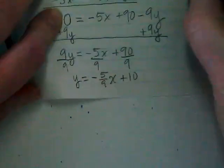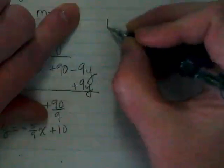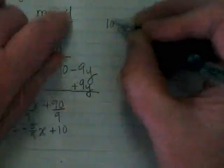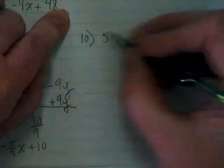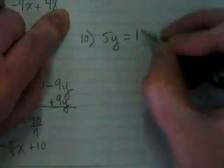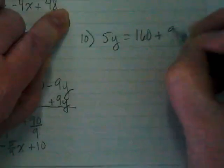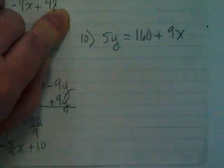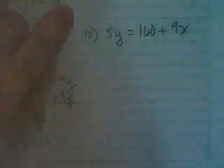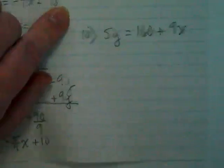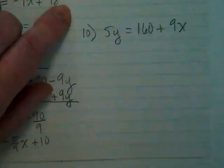Let's do one last problem together. Number 10. 5Y is equal to 160 plus 9X. There's two things that need to happen with this equation. I'd like you to turn and talk to your neighbor about what are the two things where it's not in the right format yet.